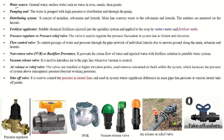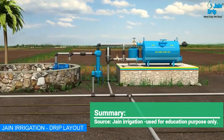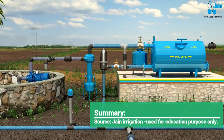The components of the drip irrigation system include the water source, pumping unit, distributing unit, fertilizer applicators such as venturi meter and fertilizer tank, pressure regulator valve, flow control valve, non-return valve, vacuum release valve, air release valve, takeoff valve, pressure gauge, vacuum gauge, water meter, and debris screen. The debris screen is used where surface water is the source, to prevent sand, trash, or weeds from entering the pump. The pumping unit lifts water from the source and conveys it to the field.